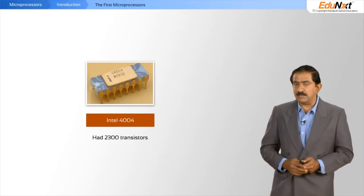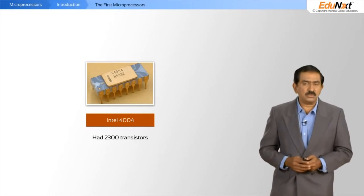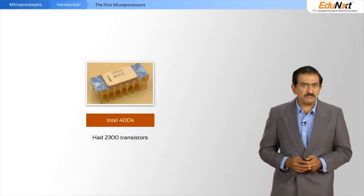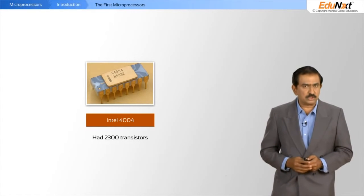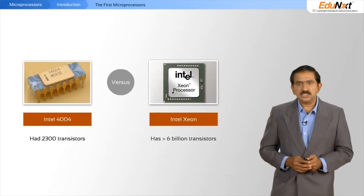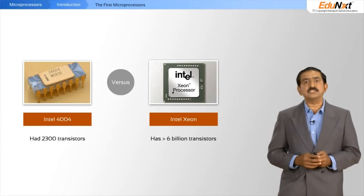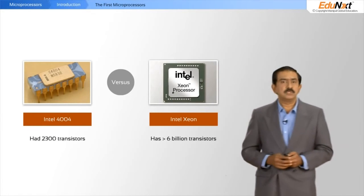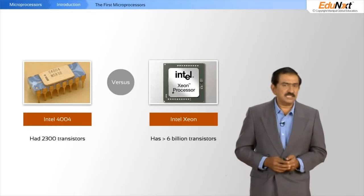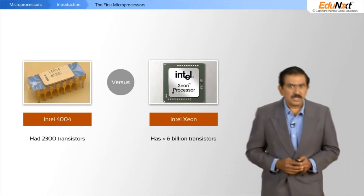This was state of the art at that time — November 15th, 1971, when it was first launched. Today's processors have in excess of 6 billion transistors. That is the advance you have seen over the last 30 years.